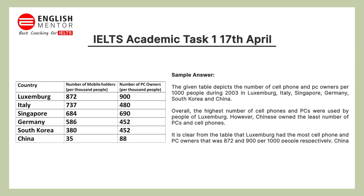If you notice in the table, there are countries: Luxembourg, Italy, Singapore, Germany, South Korea, and China. And the columns show the number of mobile phone holders per thousand people and the number of PC owners per thousand people.